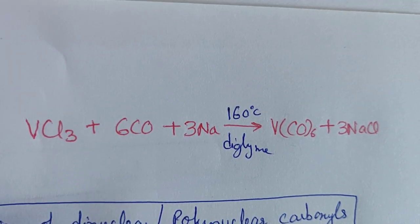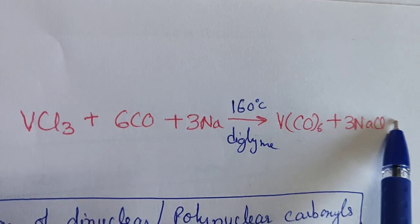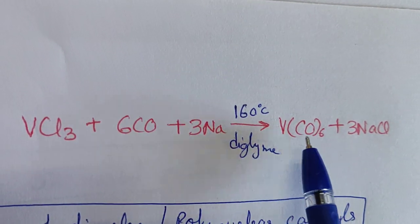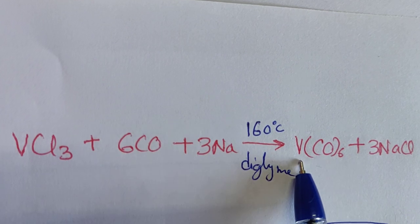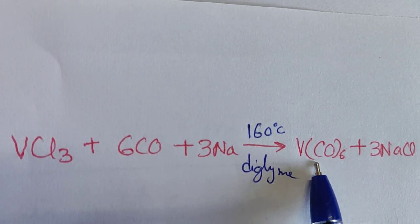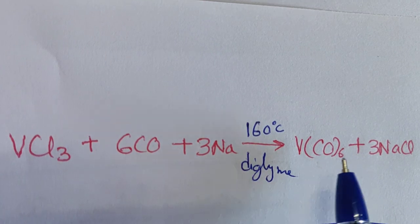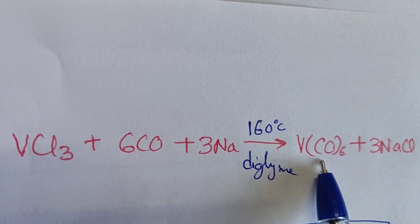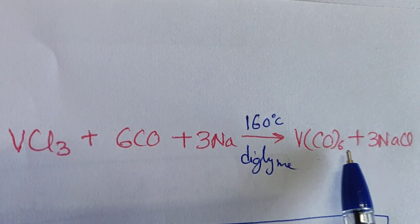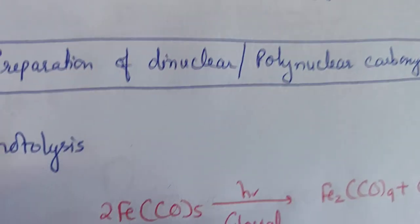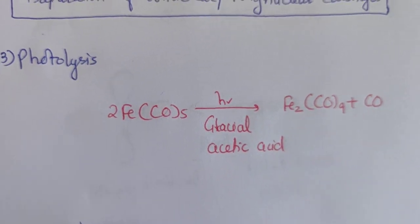Reductive carbonylation can also be used to prepare polynuclear carbonyls. For example, VCl3 reacting with 6CO under appropriate conditions forms vanadium carbonyl. Thus this method allows synthesis of both mononuclear and dinuclear or polynuclear carbonyls.